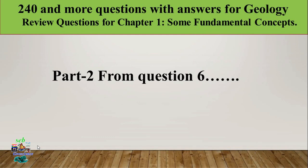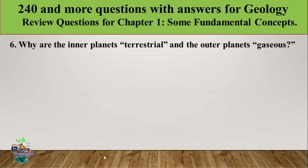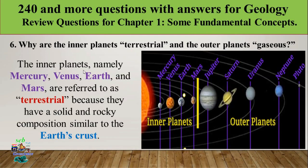Question number six: why are the inner planets called terrestrial and the outer planets called gaseous? The inner planets — Mercury, Venus, Earth, and Mars — are near to the Sun and are called terrestrial planets.